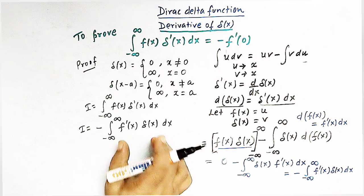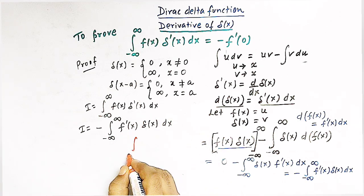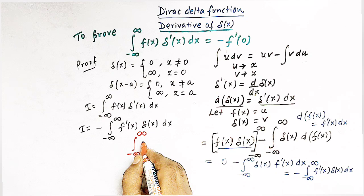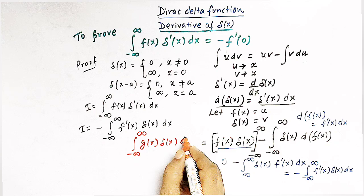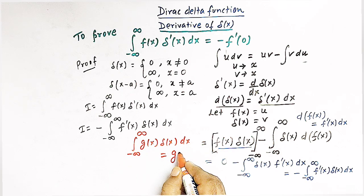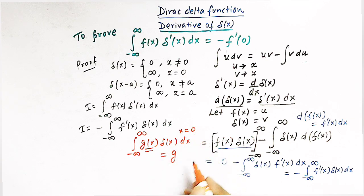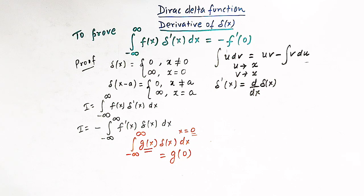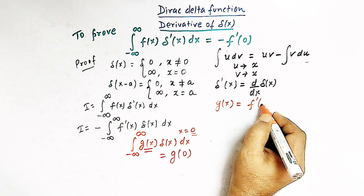To proceed further, we make use of another important property of the Dirac delta function, which states that the integral from minus infinity to infinity of g(x) times delta(x) dx equals the value of g(x) at x equals 0, that is g(0). Comparing our integral with this property, the function g(x) may be taken as f prime of x.